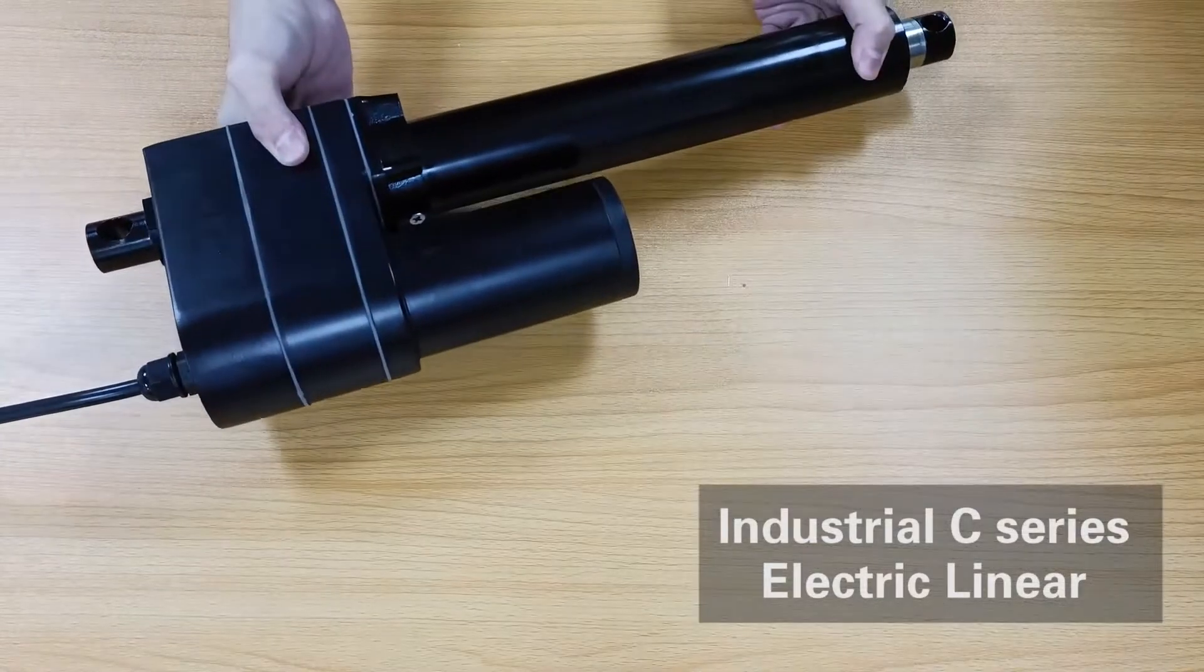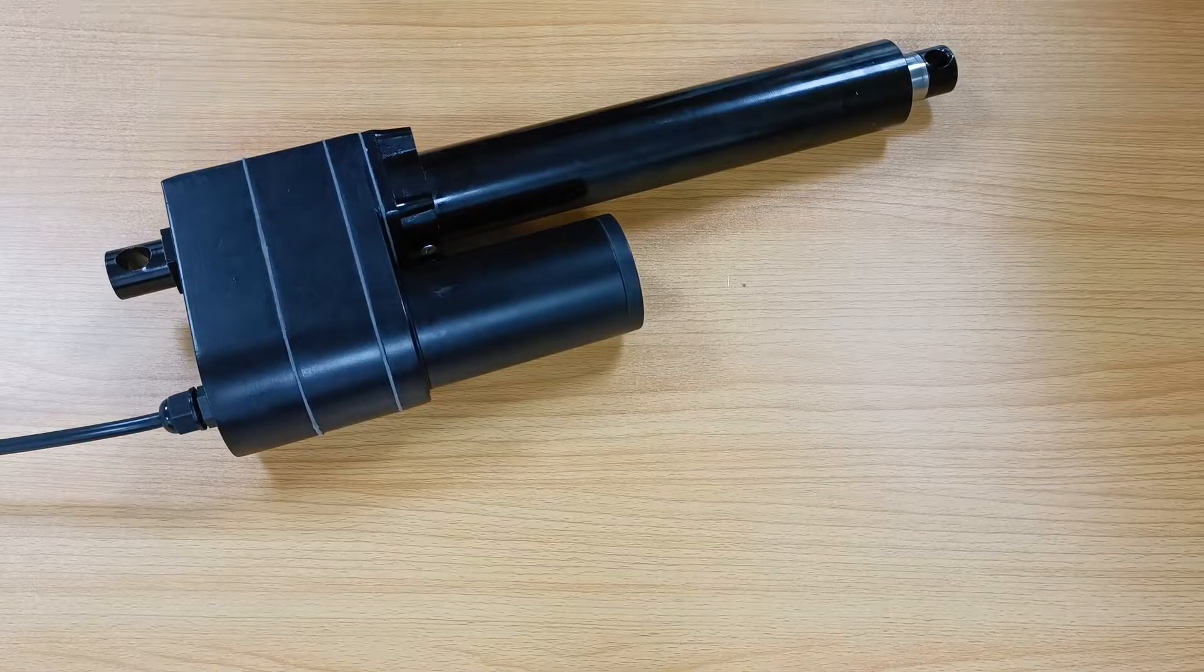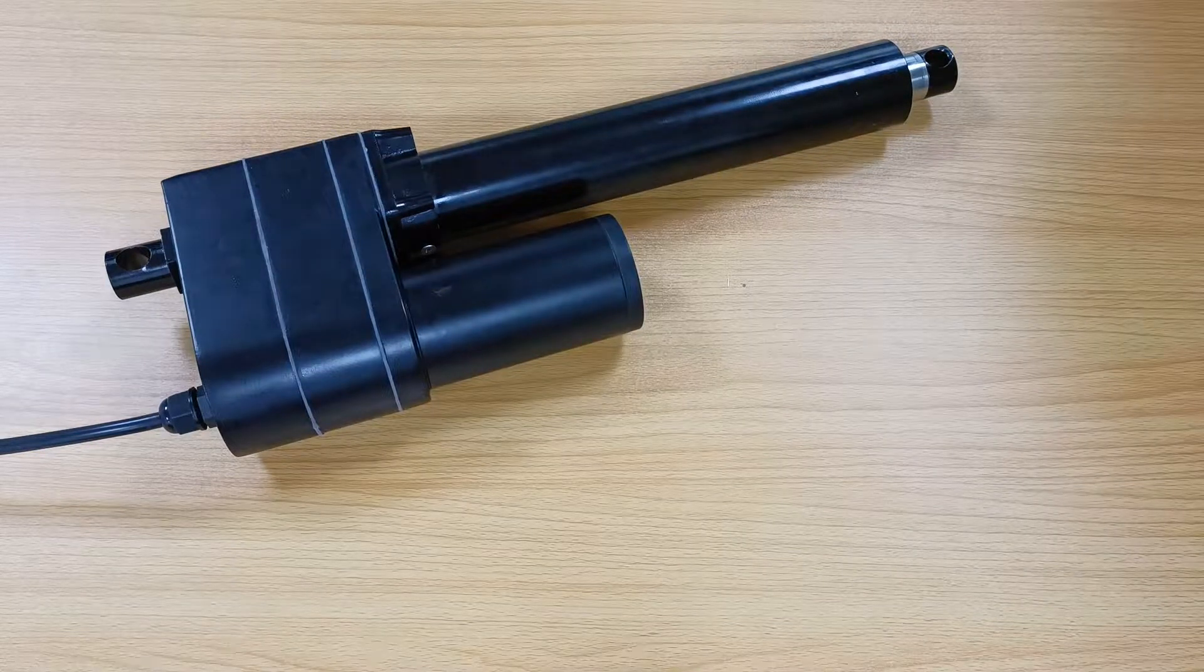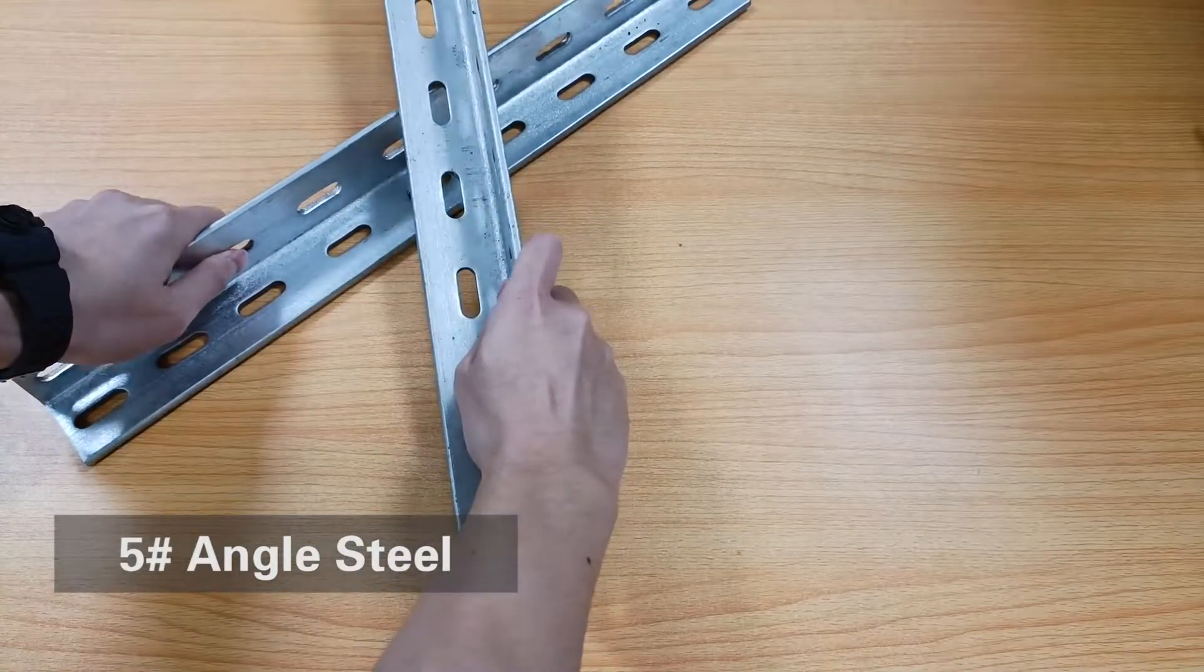Today we want to do an actual thrust test on our industrial C-series electric linear actuators. First, we need to build a test shelf. Here we use some number five angle steel and bolts to build a stable square test frame.